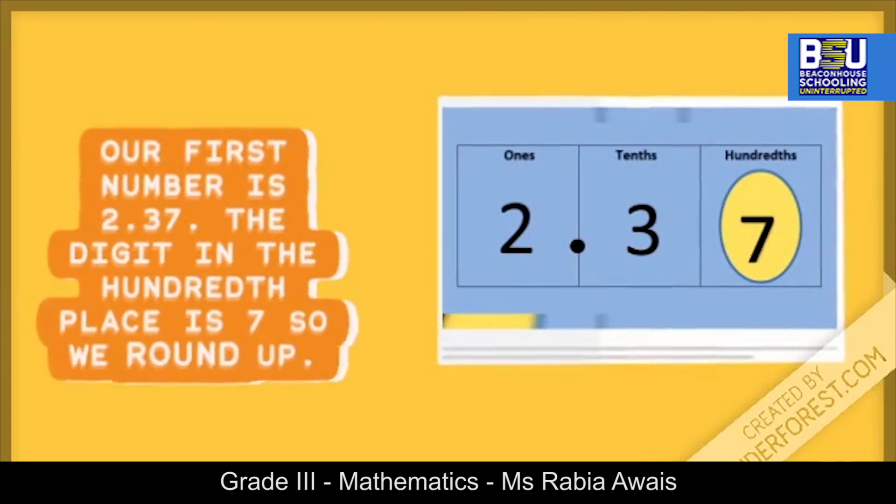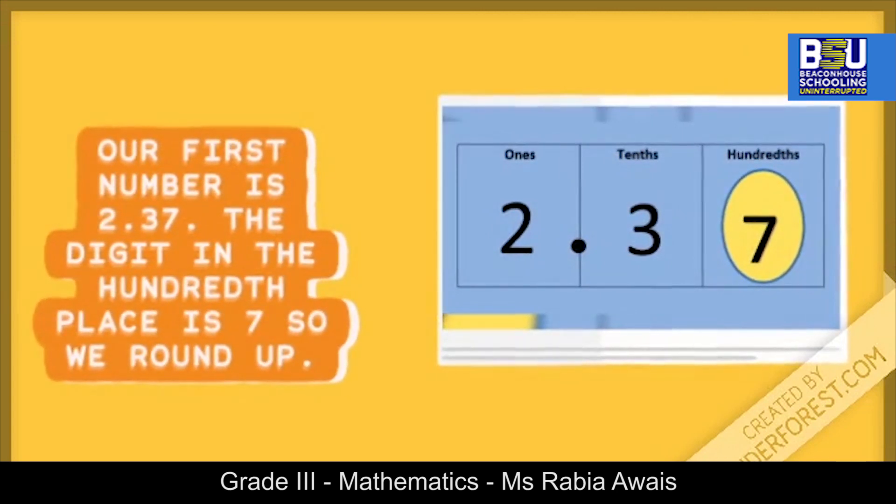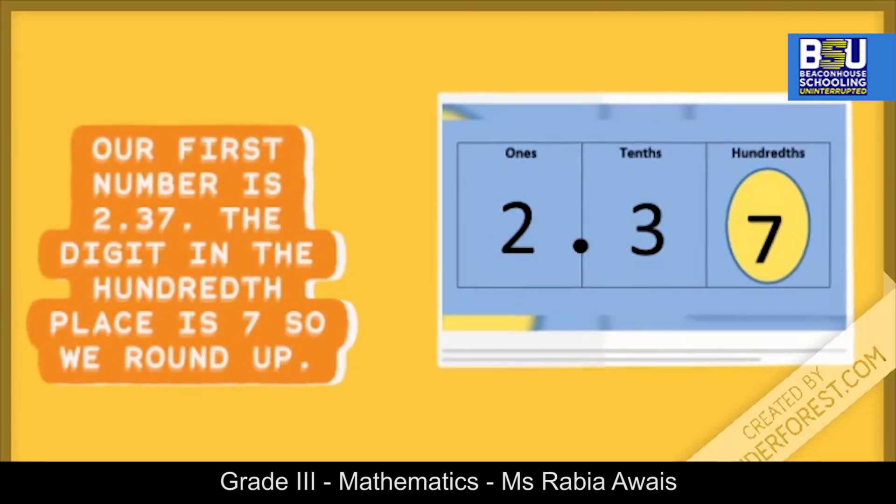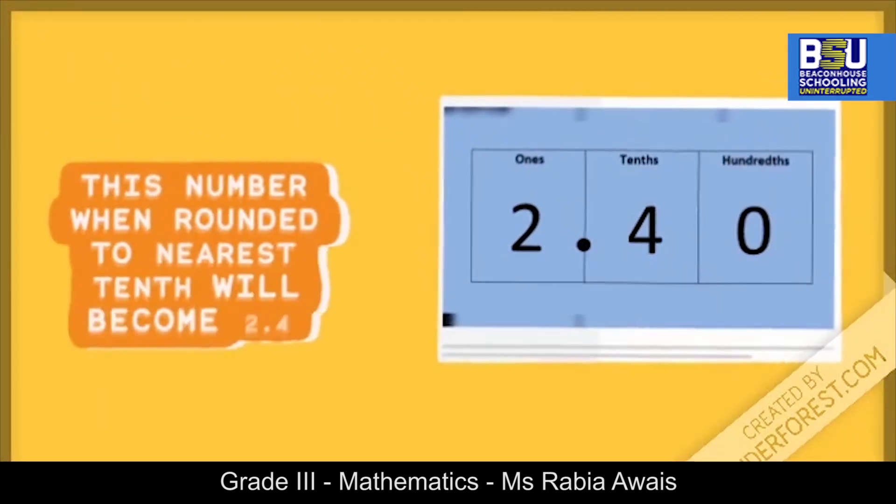Our first number is 2.37. The digit in the hundredth place is 7, so we round up. This number when rounded to the nearest tenth will become 2.4.